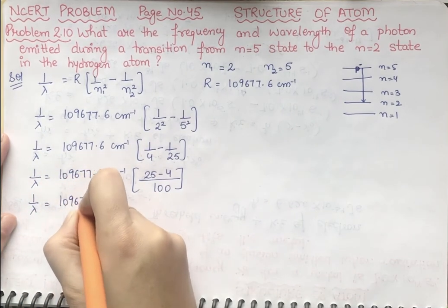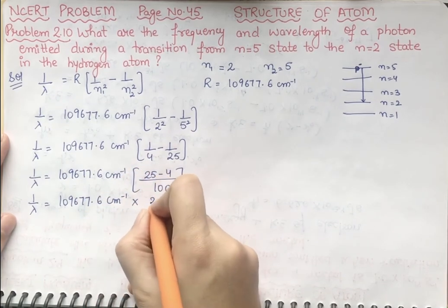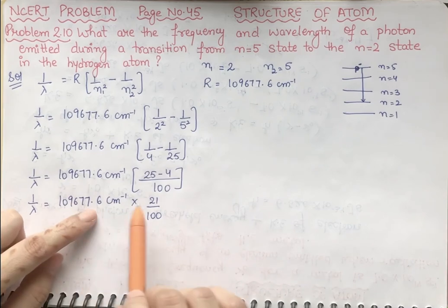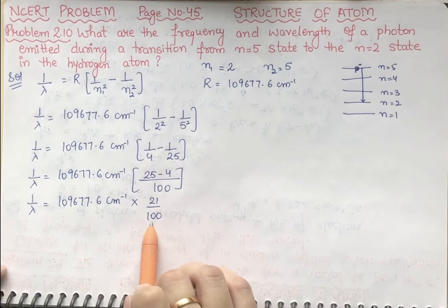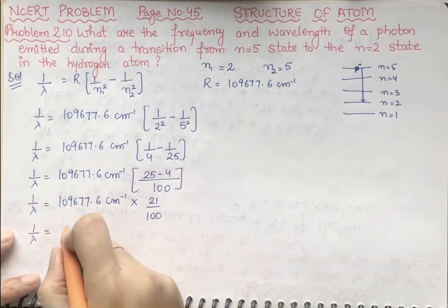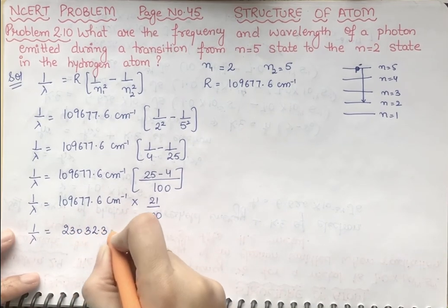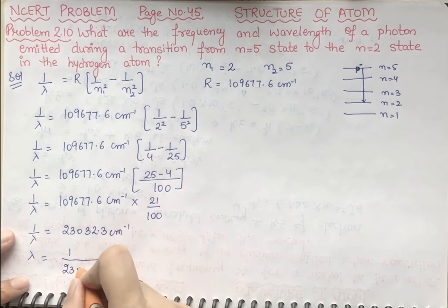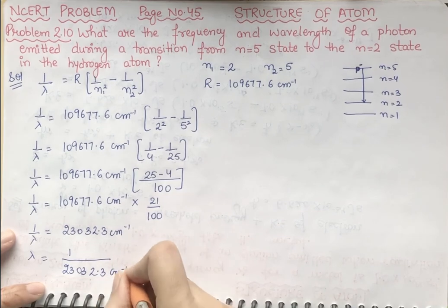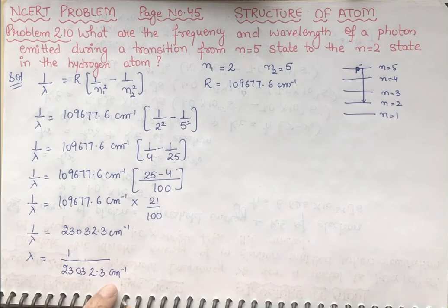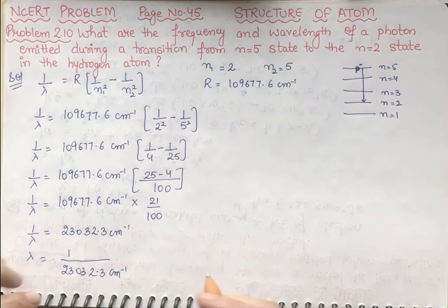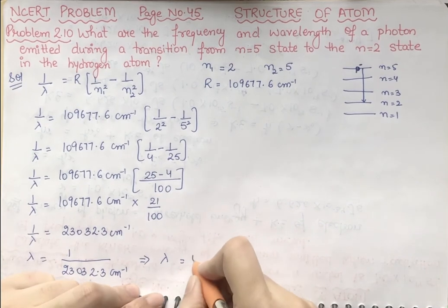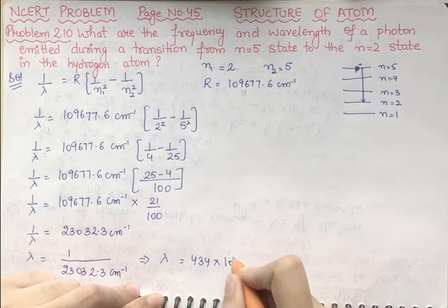So, 1 by lambda equals 109,677.6 centimeter inverse times 21 by 100. When I multiply 109,677.6 with 21 and divide by 100, I get 1 by lambda equal to 23,032.3 centimeter inverse. Now I have to find lambda. So lambda equals 1 divided by 23,032.3 centimeter inverse, and since centimeter inverse is in the denominator, it converts to centimeter. Lambda equals 434 times 10 raised to power minus 7 centimeter.